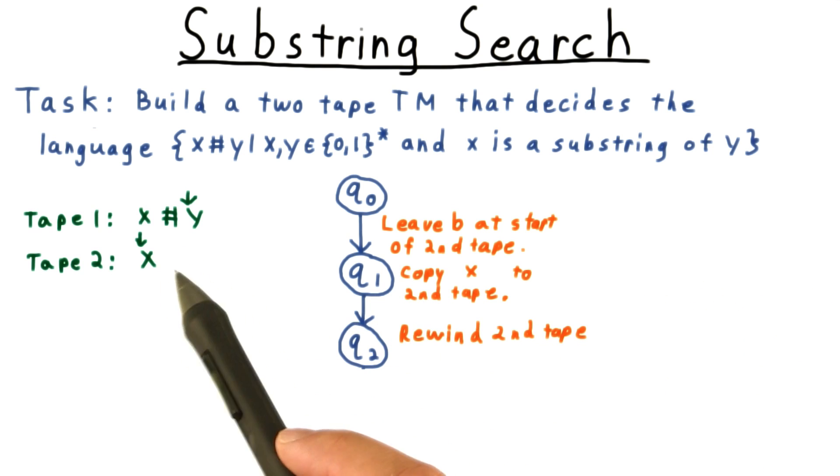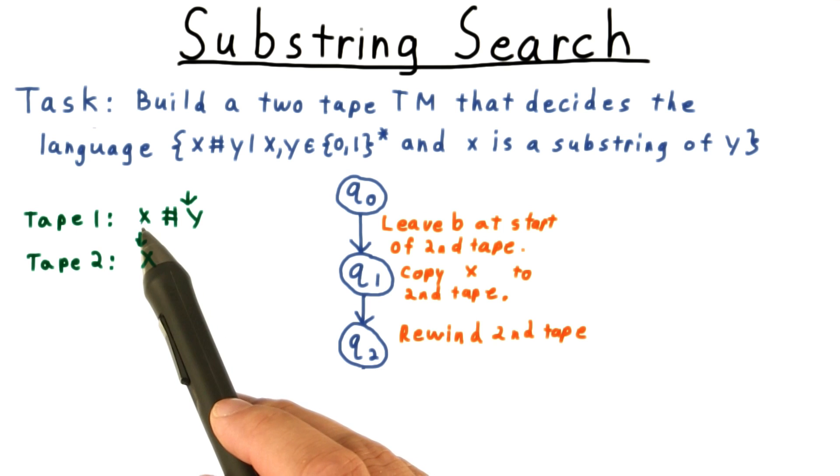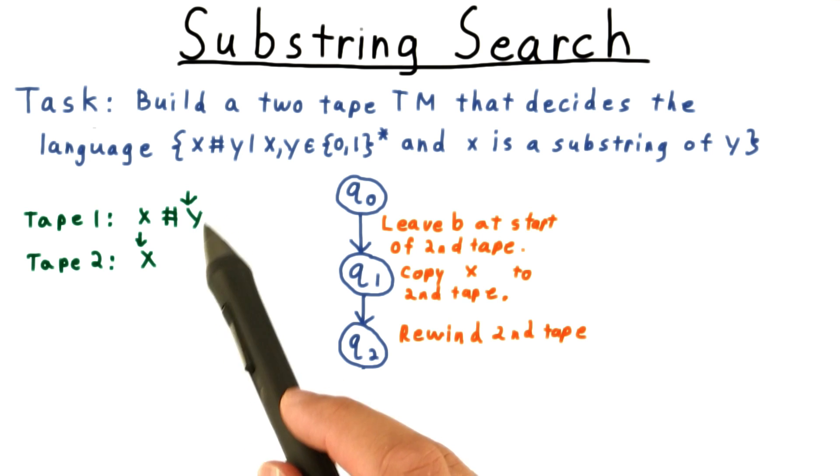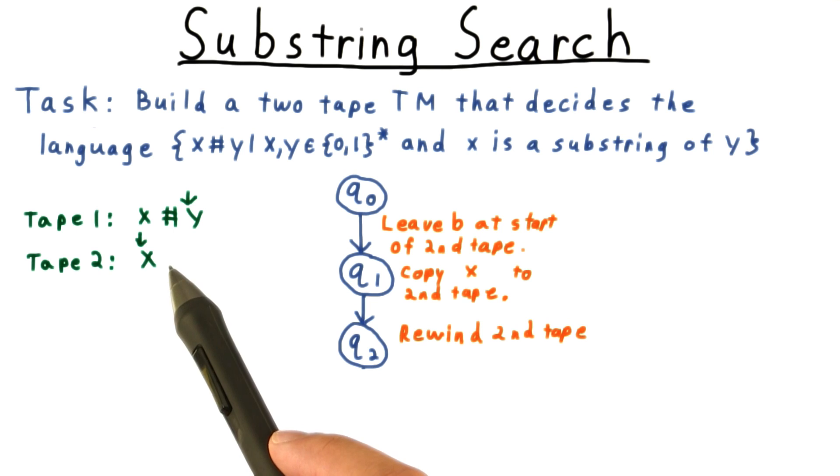We can illustrate this idea like this. We started by copying x from tape 1 to tape 2 and position the head on tape 1 at the start of y. That is the text we want to search in. And then we rewound the head on tape 2 so that it's positioned at the beginning of the key string, the thing we're going to look for within the text y.